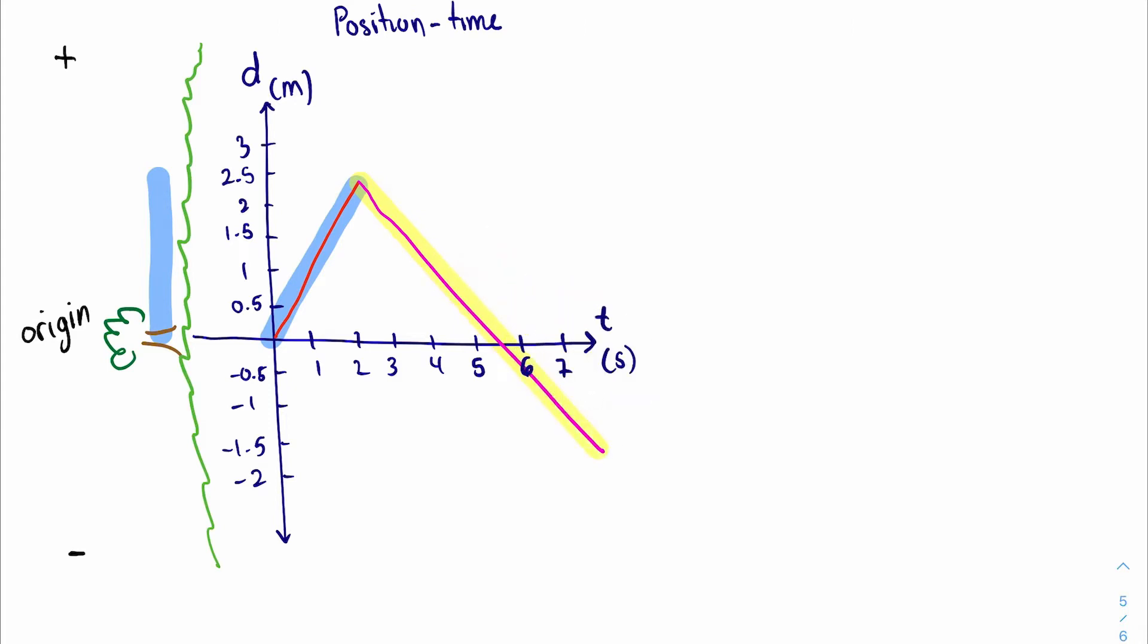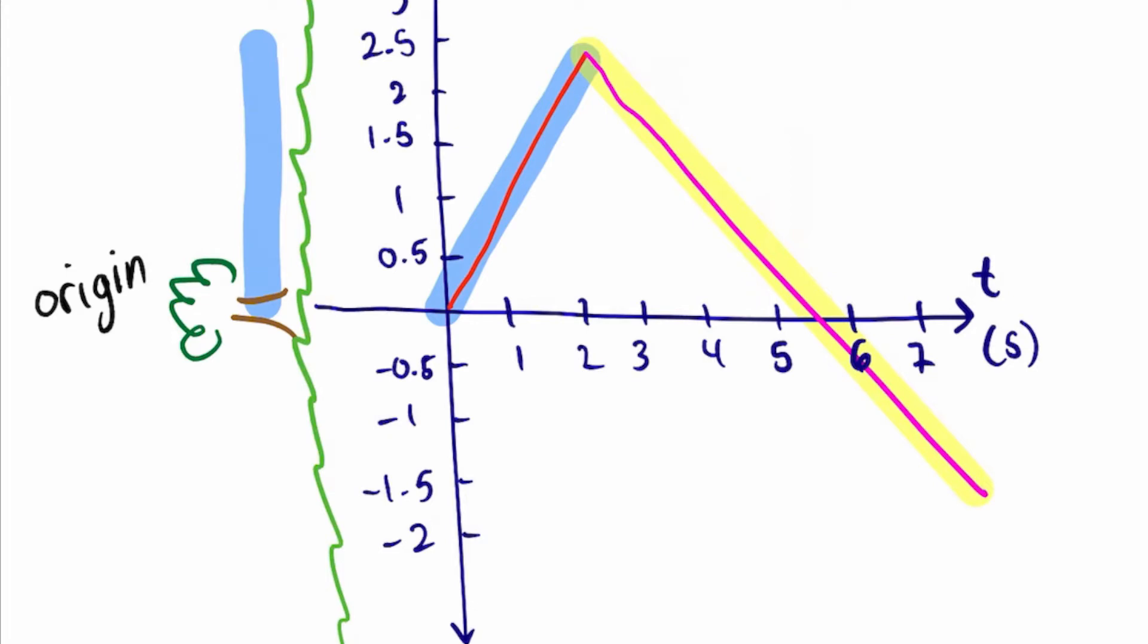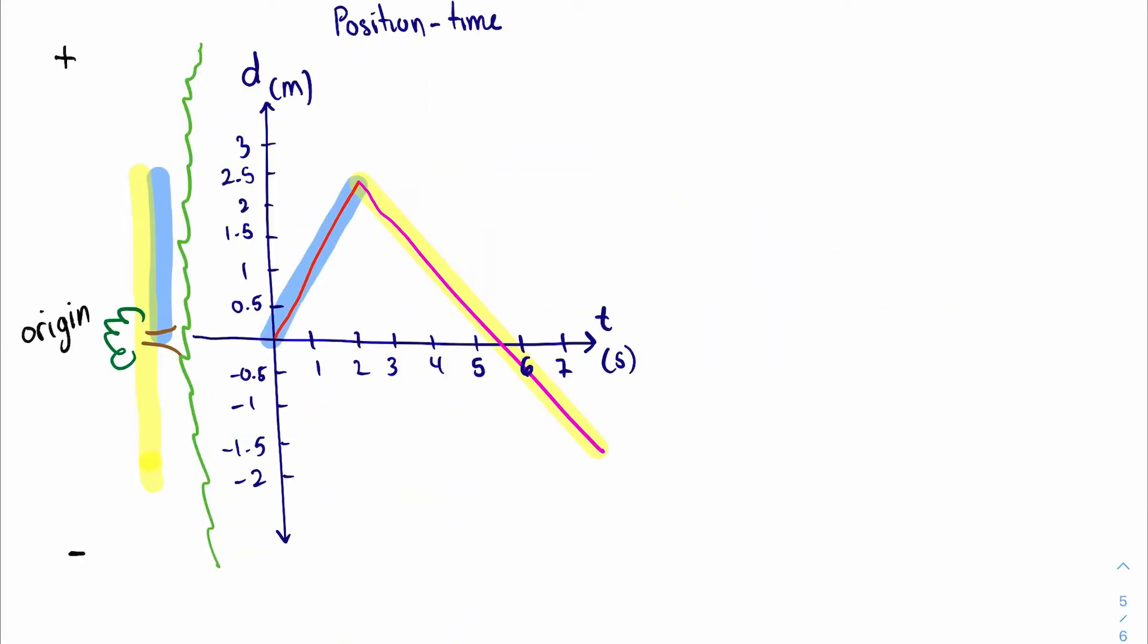Then during the pink line it begins to go back towards the tree, hits the tree and keeps on going. Let's represent this. So in the pink line it begins to change its direction towards the tree and it goes past the tree.